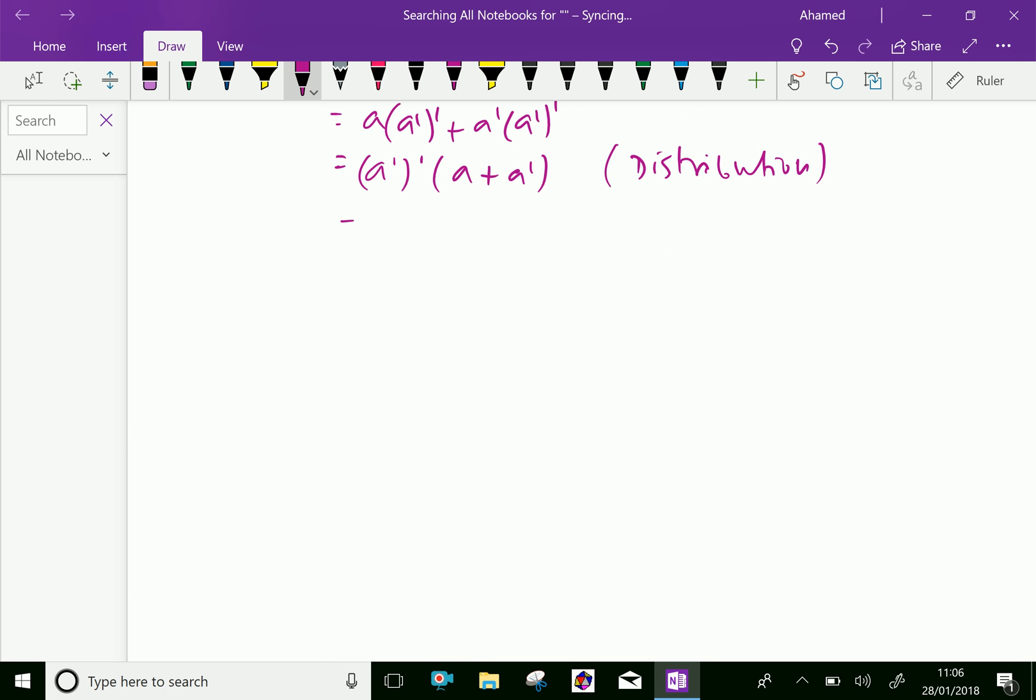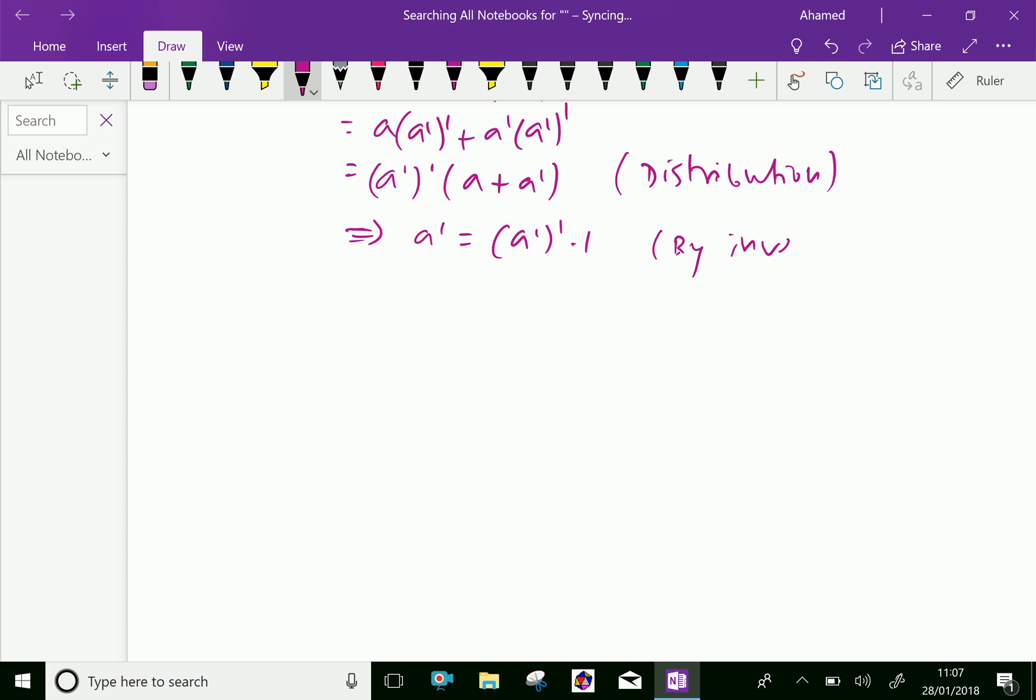Now further we can write a' = a'' · 1, by inverse. Therefore a' = a'' by identity.